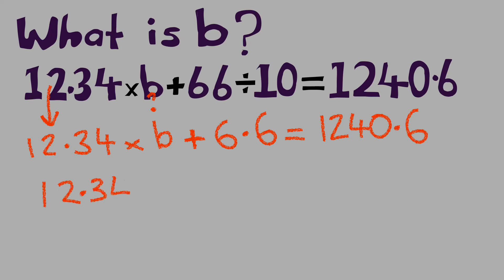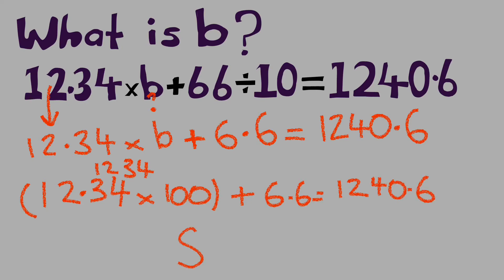So 12.34 multiplied by 100, we'll see that's going to give us 1234, so getting closer to 1240. Then we add the 6.6, so our answer on this side again is 1240.6. The question is asking what is b? Here b is going to be 100, that's what it's worth.